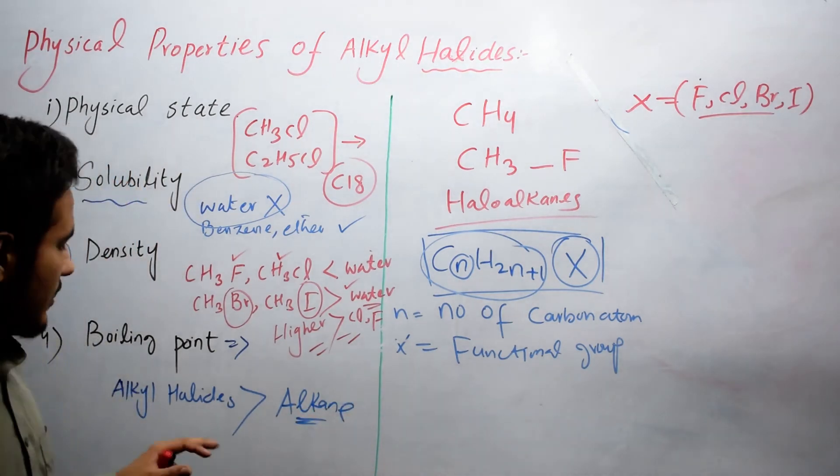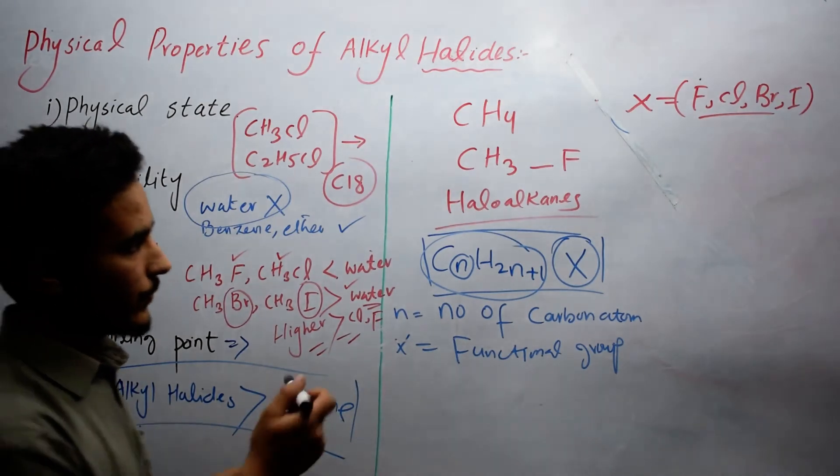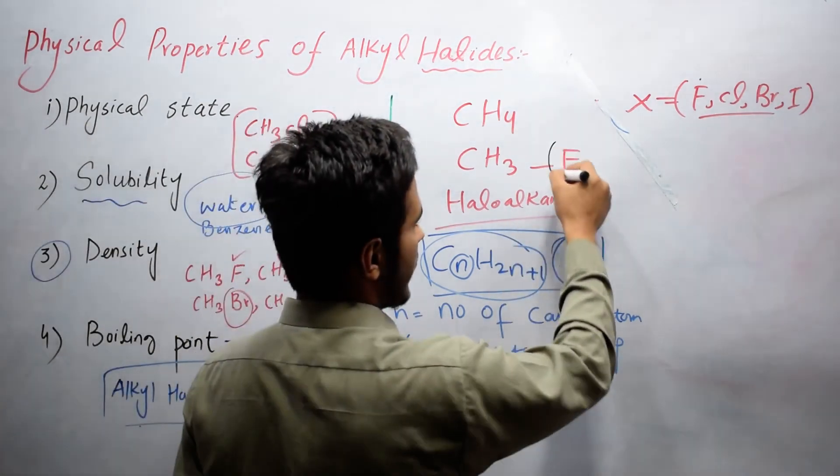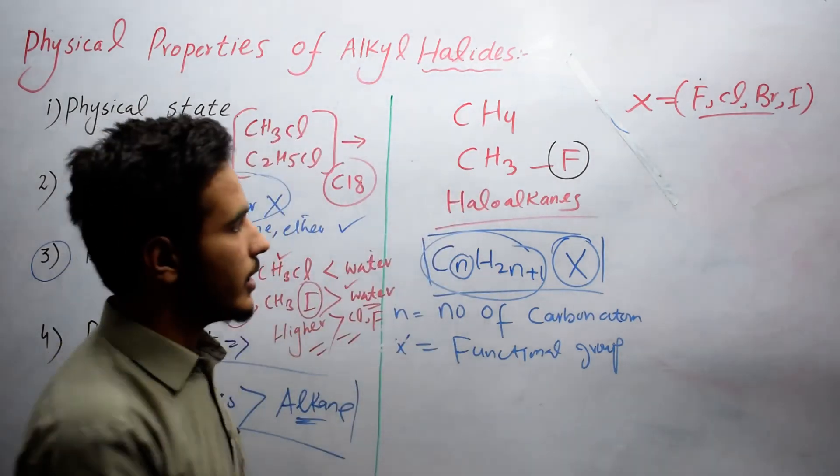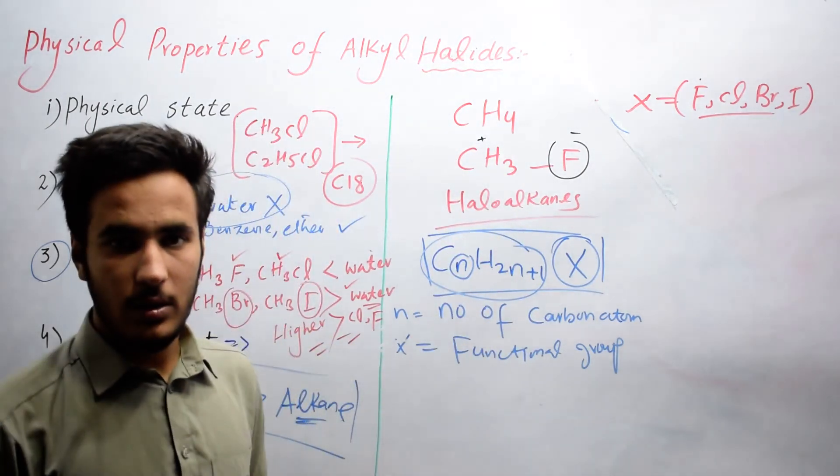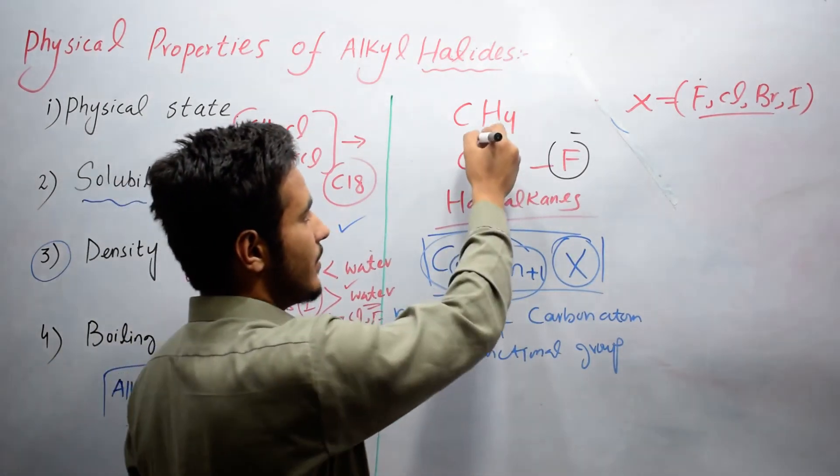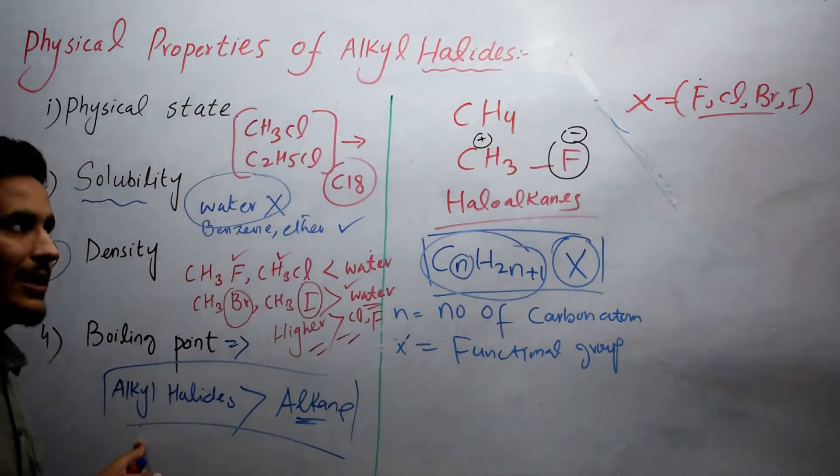The reason is, in the case of alkyl halides, we have fluorine which is more electronegative than hydrogen. So here it will appear negative charge and on carbon it will appear positive charge. So this is the main reason that the boiling point of alkyl halide is higher.